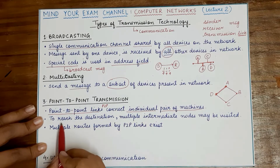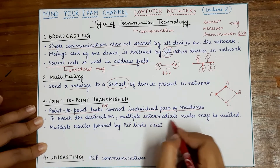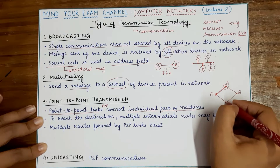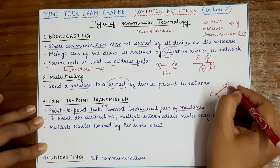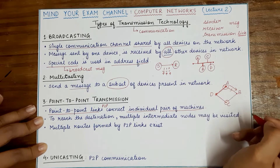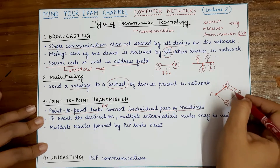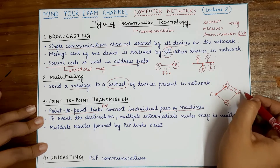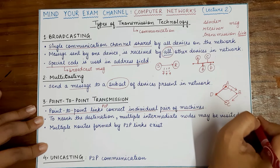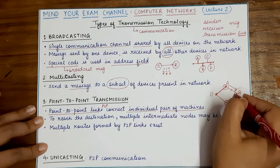Whenever a message from a sender has to reach the destination, it will cross multiple intermediary nodes. If A has sent a message for C, the message might go from A to B first, crossing a P2P link. Since B sees that the message is not intended for itself, it forwards the message to the next node, C. C receives the message, so B acts as an intermediary node.